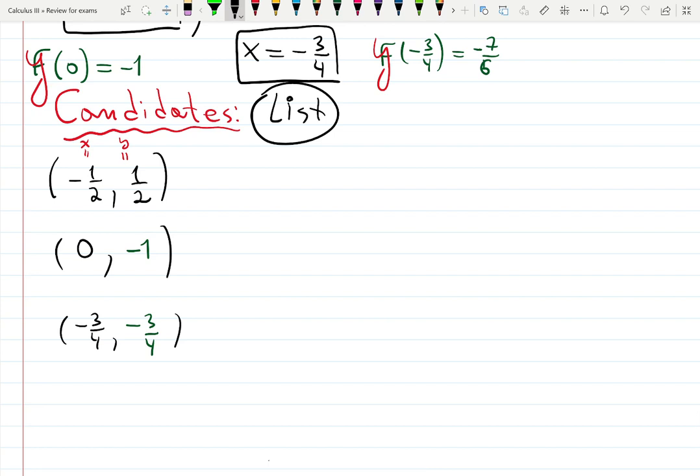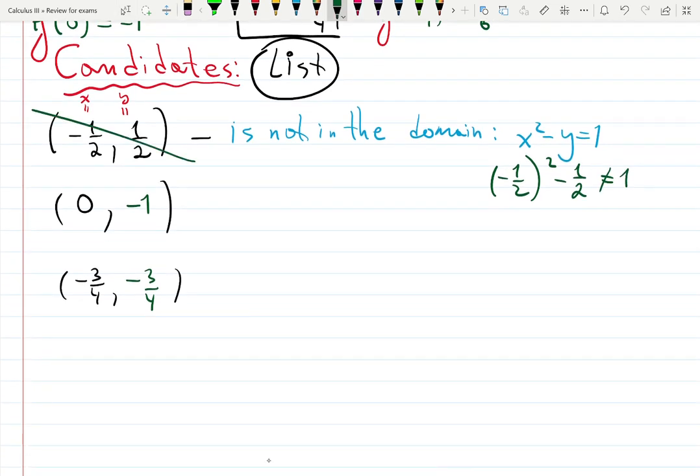The thing is we do have the extra solution here. This solution is not in the restricted domain which is x squared minus y equals 1. Minus one half squared minus one half is one quarter minus one half, which is not one. So we have to cross it off the list.